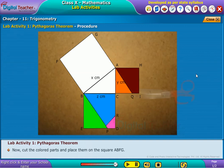Now cut the colored parts and place them on the square ABFG. Observe the changes.